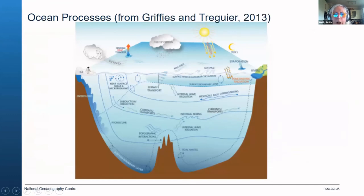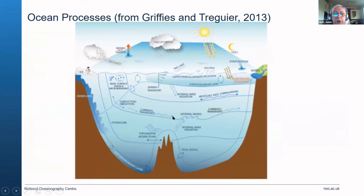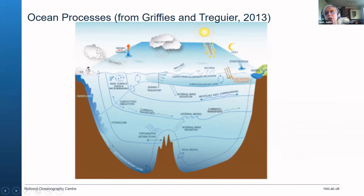Ocean processes in models — there are a lot of things going on in the ocean which we haven't touched on because we've been focusing on sea level and waves at the coast. But ocean models are calculating all of these processes: various currents transporting things, internal tides and waves, mid-ocean ridge tidal mixing, and surface waves. This complexity captures background and fluctuating currents, as well as inter-annual variability of temperature and salinity.